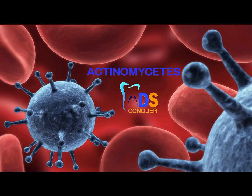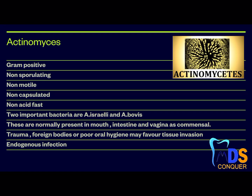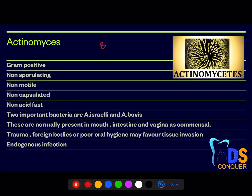Starting with the mind map for this bacteria: the first important point is that most people consider these organisms as transitional forms — organisms that stand in between bacteria and fungus, considered as transformation forms from bacteria to fungus. It is gram positive, non-sporulating, non-motile, non-capsulated, and non-acid fast.